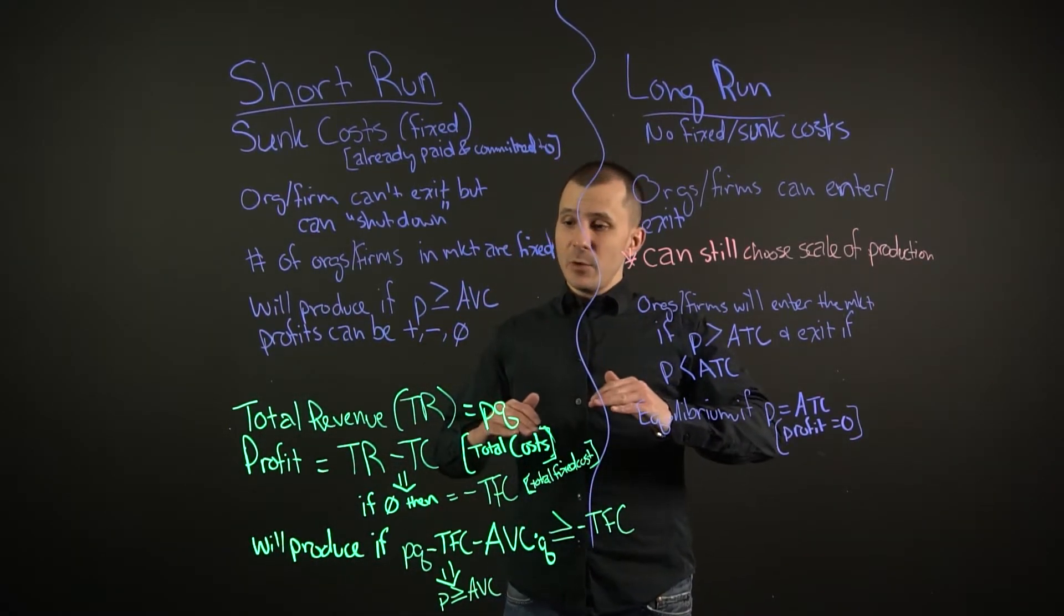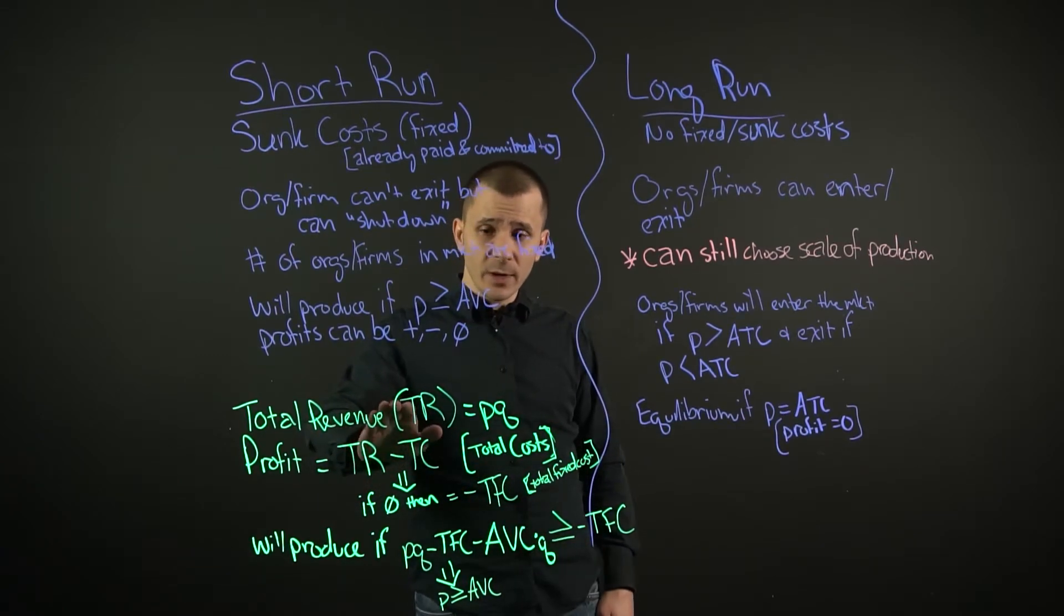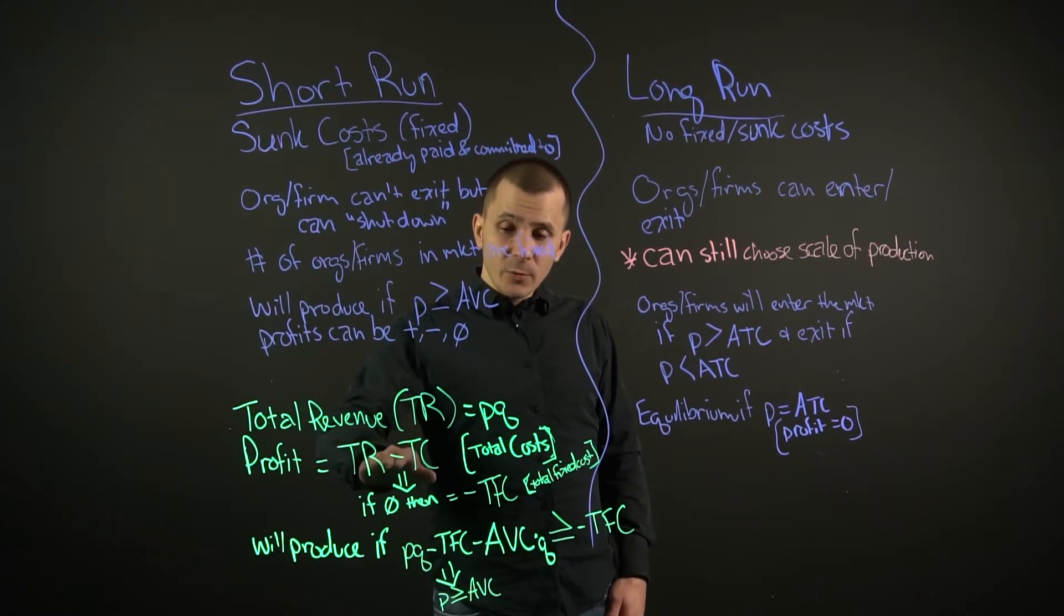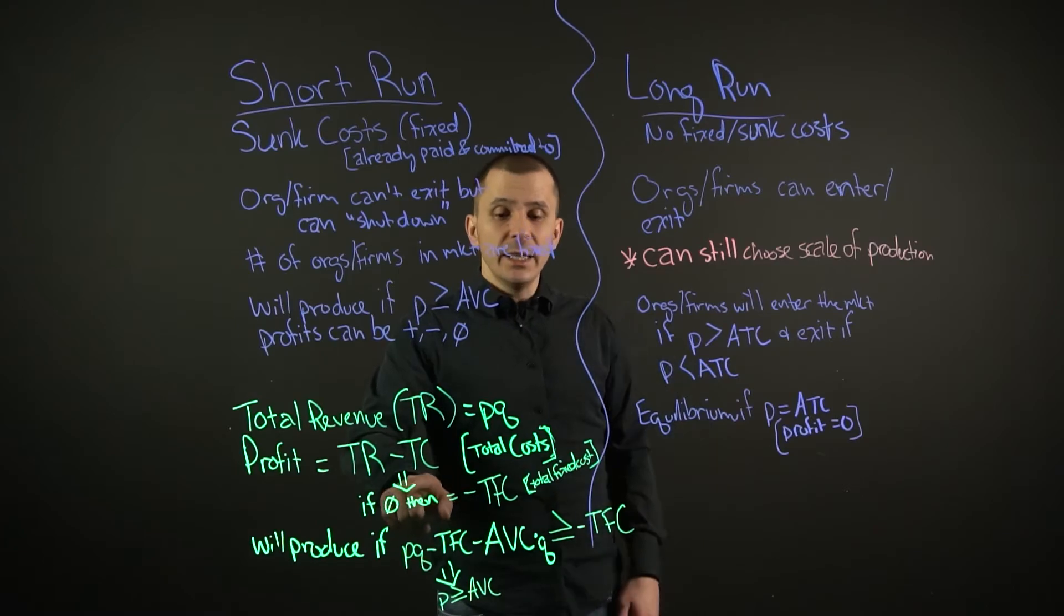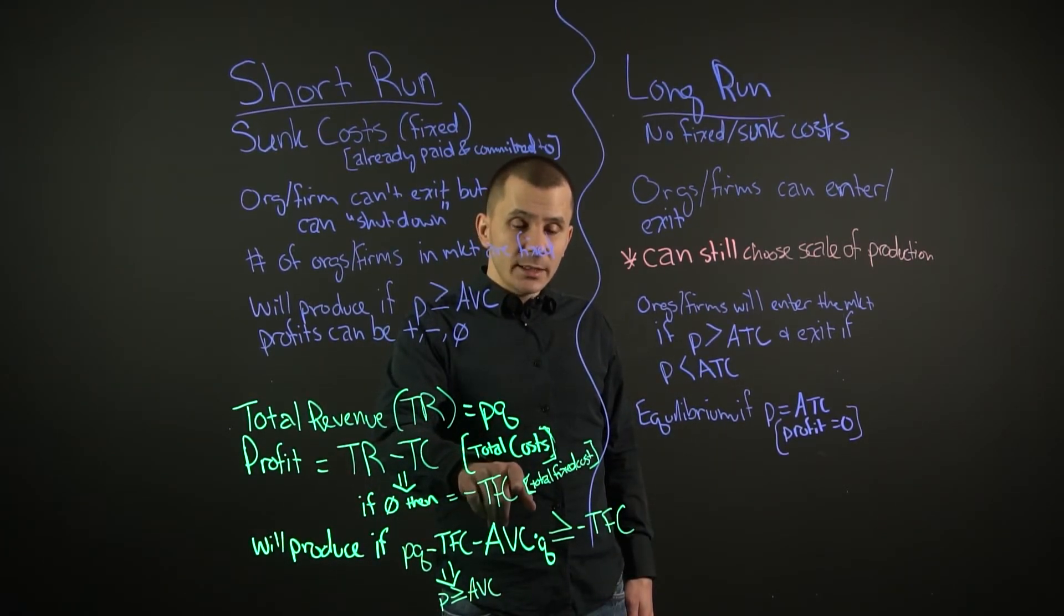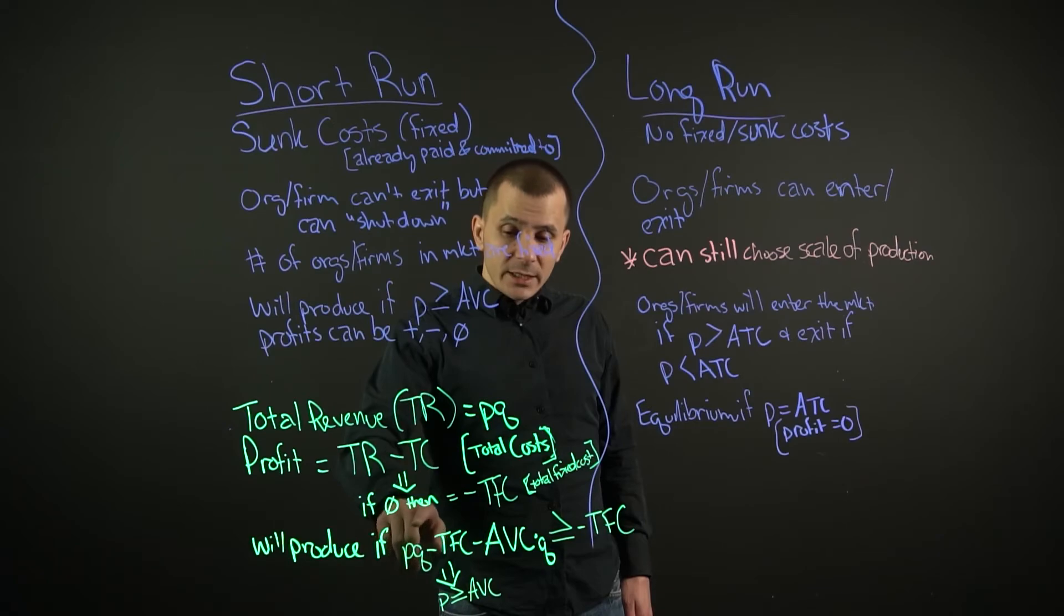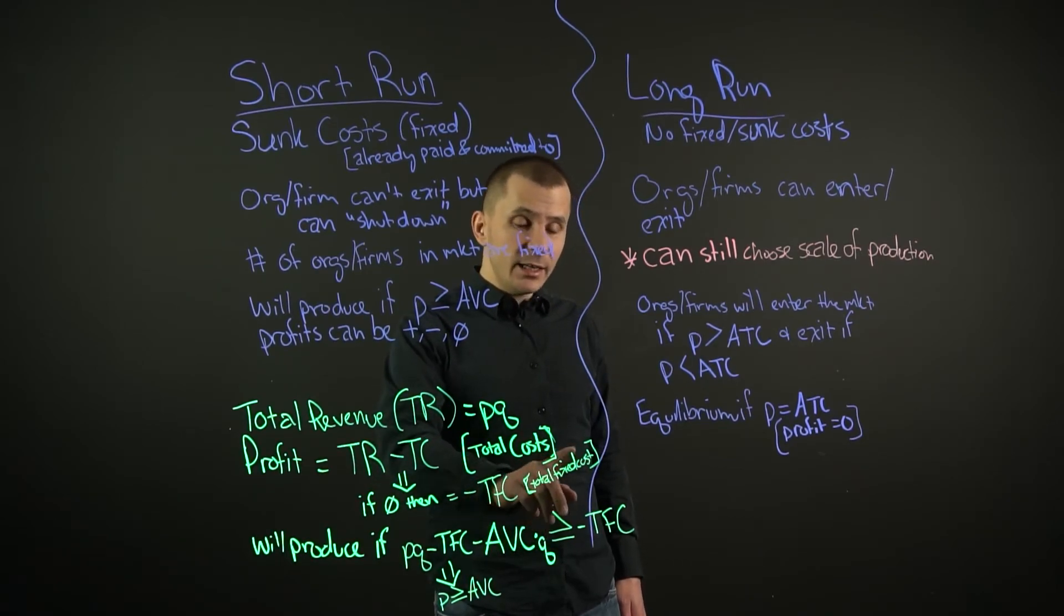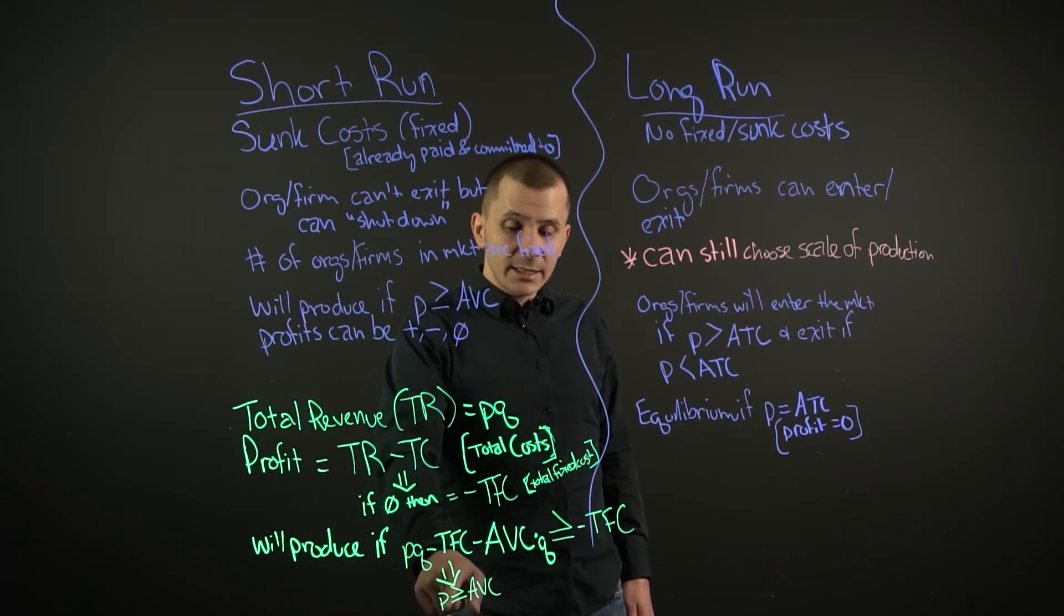So, let's go down here for a moment and take a look at some of the math and some of the things that are associated with this. When it comes to total revenue, total revenue can always be expressed as price times by quantity. And profit equals total revenue minus total costs. And if this is zero, so for example, our equilibrium, then we end up with a negative total fixed cost. And again, the company will produce, or the firm organization will produce, if price times by quantity minus total fixed cost minus the average variable cost times by quantity is greater than or equal to negative total fixed costs. And if total fixed cost is zero, we can simplify it further to say that price has to be greater than or equal to the average variable cost.